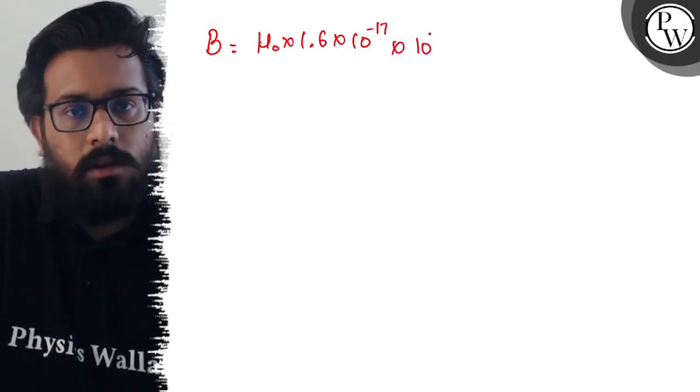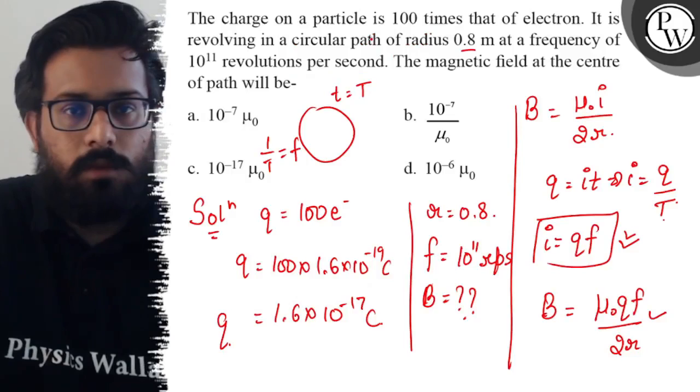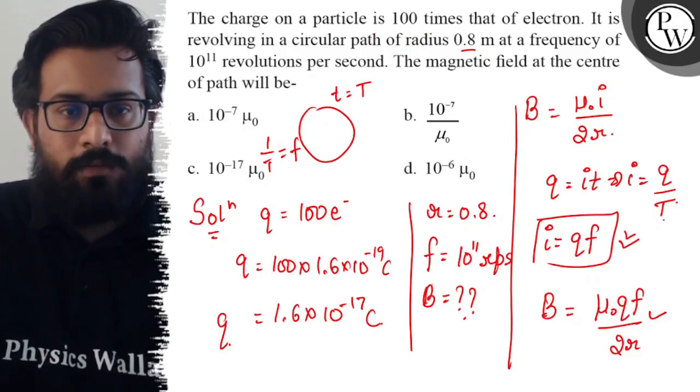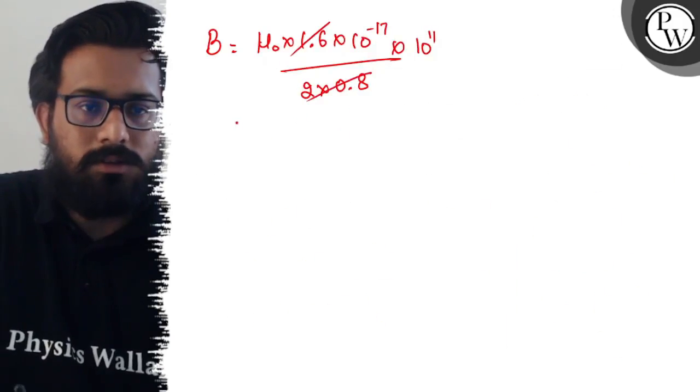We have to find the value in terms of μ₀. When you cancel out the data, the value of B comes out to be μ₀.